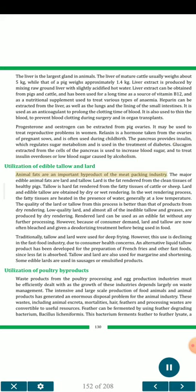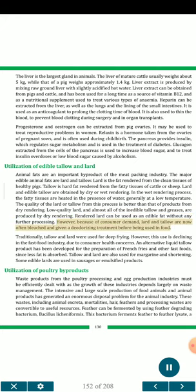Utilization of edible tallow and lard. Animal fats are an important by-product of the meat packing industry. The major edible animal fats are lard and tallow. Lard is the fat rendered from the clean tissues of healthy pigs. Tallow is hard fat rendered from the fatty tissues of cattle or sheep. Lard and edible tallow are obtained by dry or wet rendering. In the wet rendering process, the fatty tissues are heated in the presence of water, generally at a low temperature. The quality of the lard or tallow from this process is better than that of products from dry rendering. Low quality lard and almost all inedible tallow and greases are produced by dry rendering. Rendered lard can be used as an edible fat without any further processing. Because of consumer demand, lard and tallow are now often bleached and given a deodorizing treatment before being used in food. Traditionally, tallow and lard were used for deep frying, but this use is declining in the fast food industry due to consumer health concerns. Tallow and lard are also used for margarine and shortening. Some edible lards are used in sausages or emulsified products.